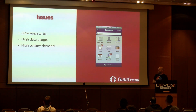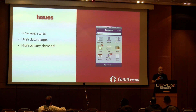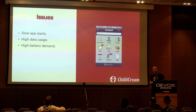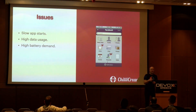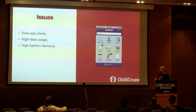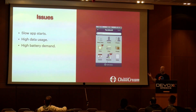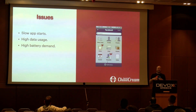Users complained mainly about slow startup times, high data usage, and that it drained your battery quickly. When I say high data usage, we're talking 2010 to 2012 — remember what kind of data plans you had back then with your mobile phones, maybe 200 megabytes. The Facebook app could drain your entire data plan in a day or two.